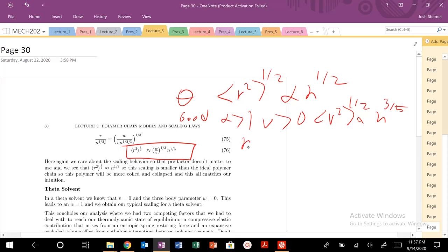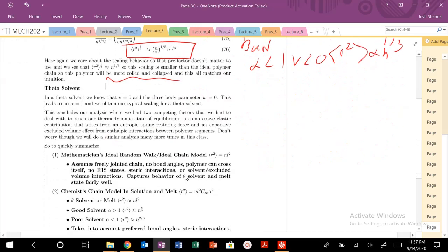We know that our scaling will be n to the 3 halves. And finally, for bad solvent, where the polymer is going to collapse on itself, for alpha less than 1, for V less than 0, our r squared is going to vary as n to the 1 third, smaller. So our polymers collapse. So we've proven this quantitatively once again.